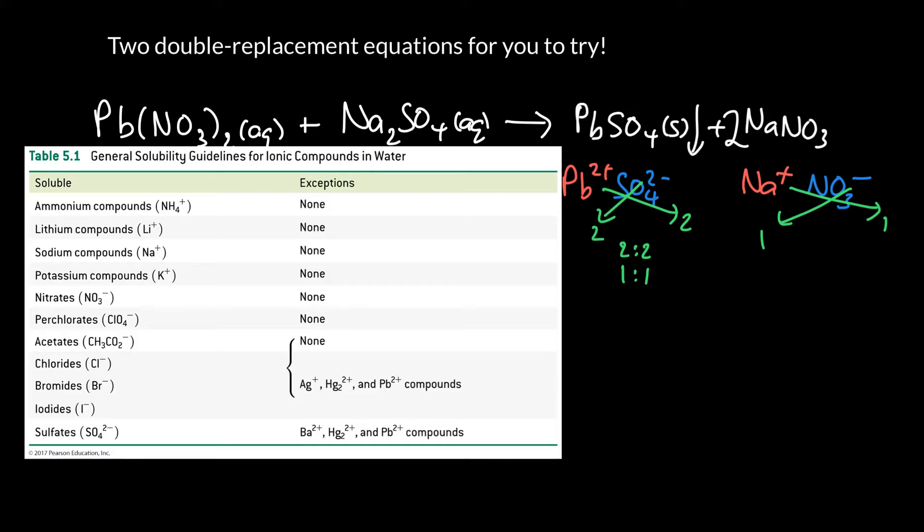Whereas if we look at sodium nitrate, as we go down, sodium's the third one on the list. It's soluble with no exceptions. We could stop there. And actually, if you went on down two more, you'd find nitrate soluble with no exceptions. So because it's soluble, we would write AQ next to it like so.